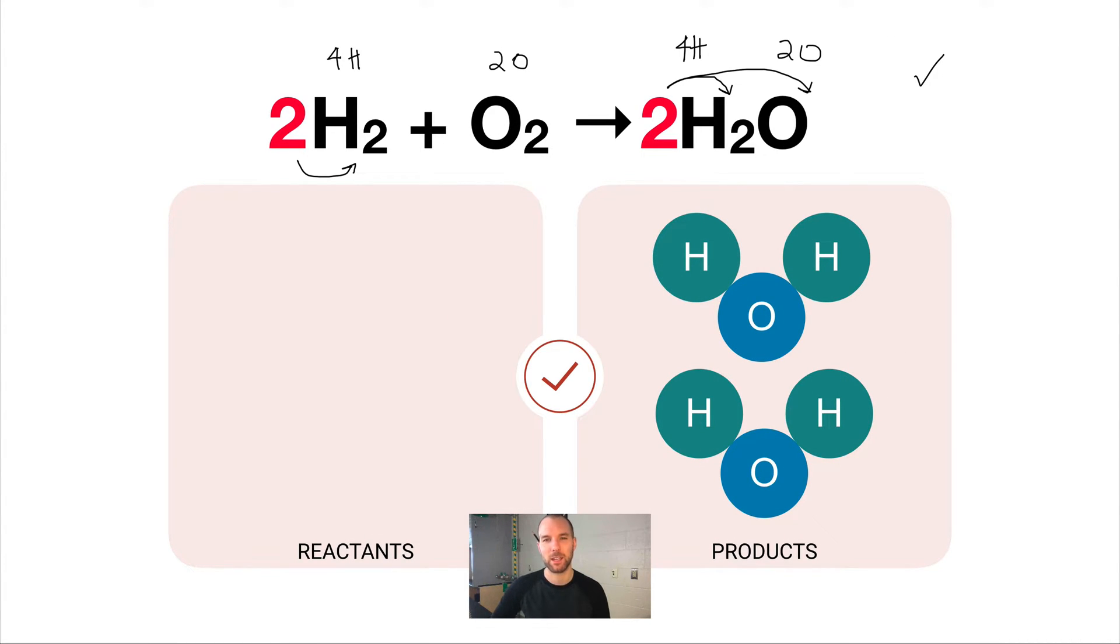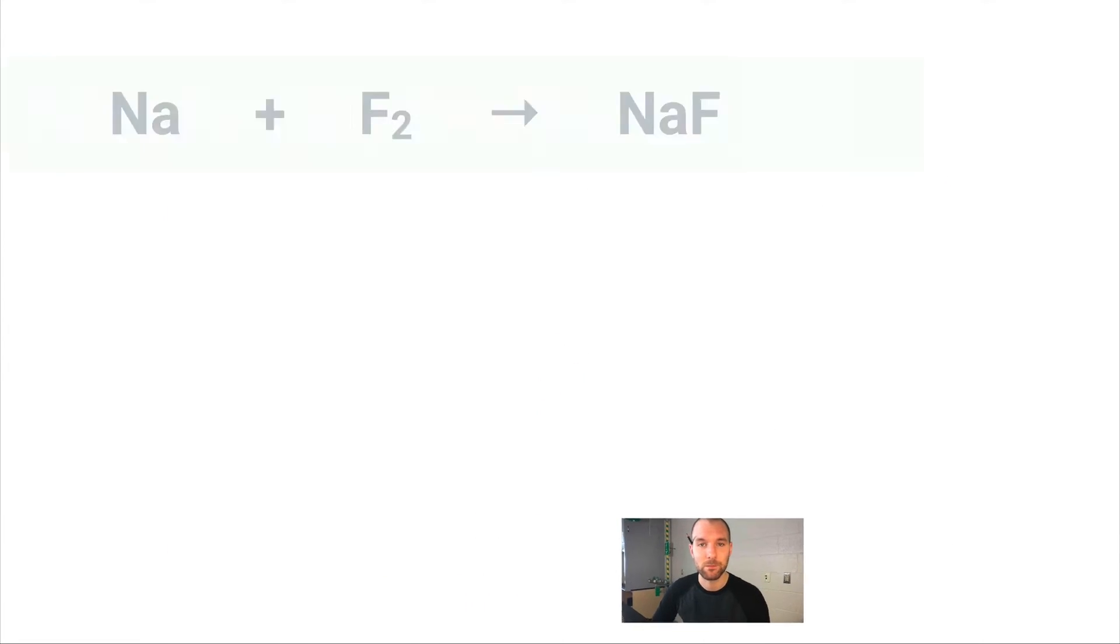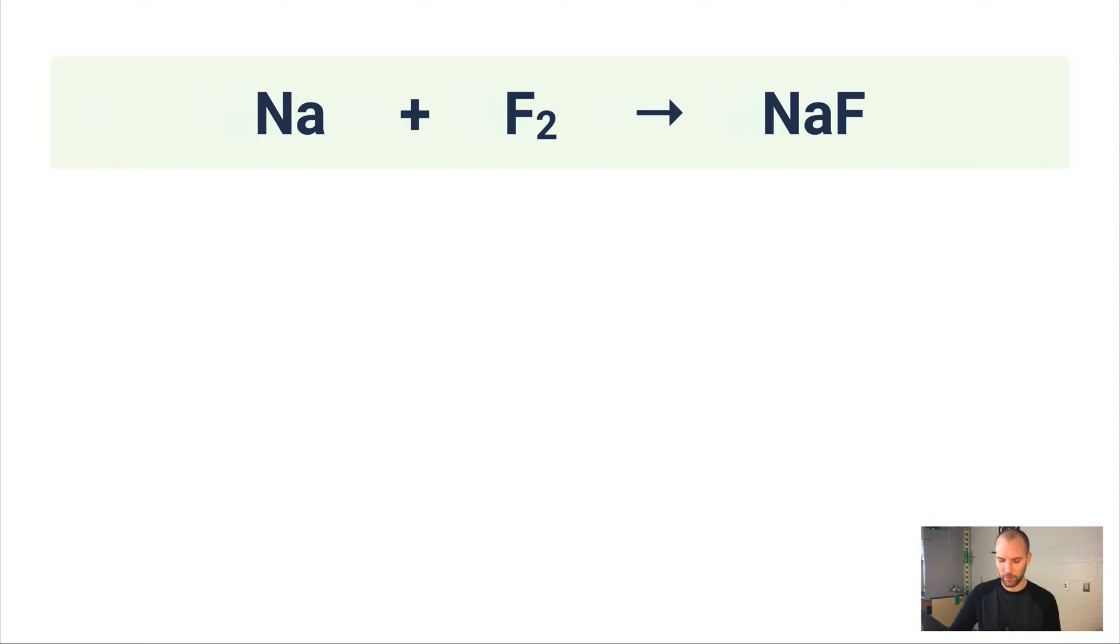The fact that as many oxygens go in as many come out and the same thing's going on for hydrogen means that I have a balanced equation. So that's how we have to represent chemical equations. We can't just write what the formulas for the substances are. We have to tell the full story, we have to put the quantities in.